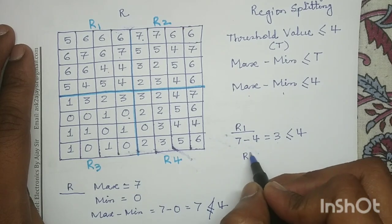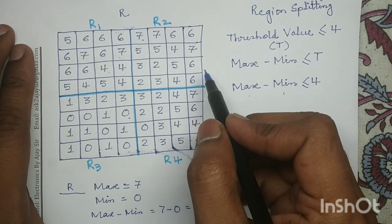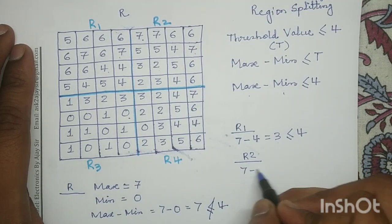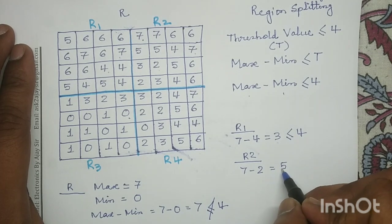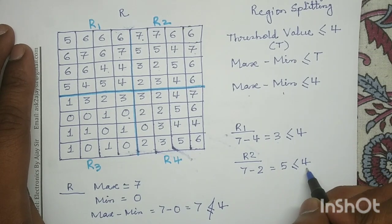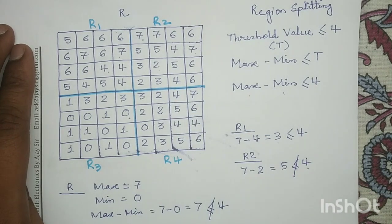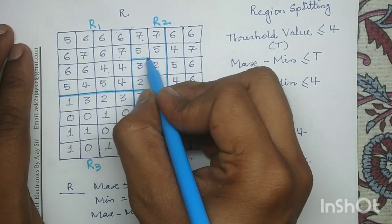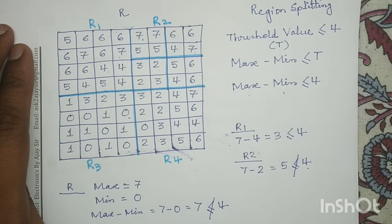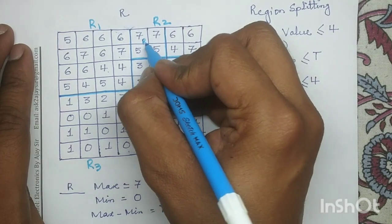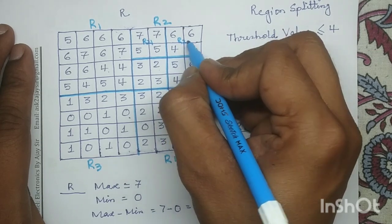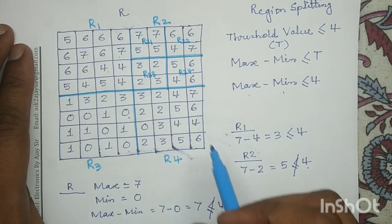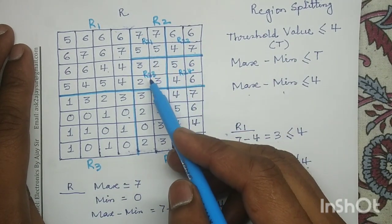Next we check for region R2. For region R2, the maximum value is 7 and the minimum value is 2. So 7 minus 2 equals 5. It is not less than or equal to 4, so it does not satisfy the homogeneity condition. We will split region R2 again into 4 quadrants and give naming to each sub-region: R21, R22, R23, and R24.